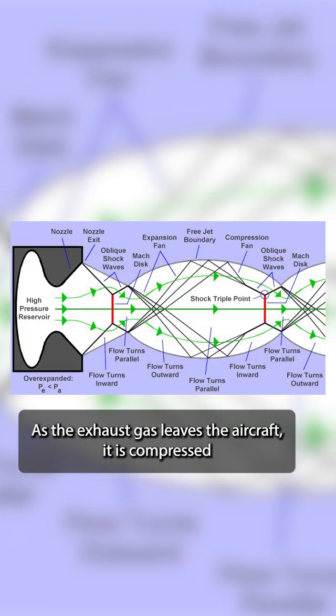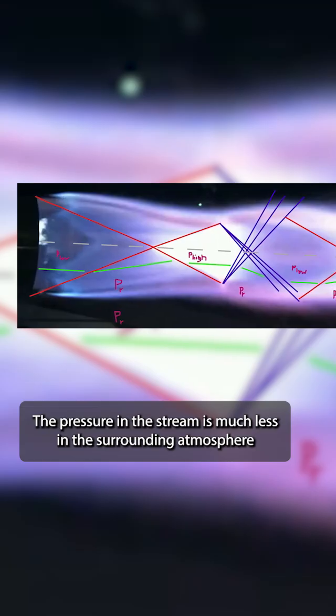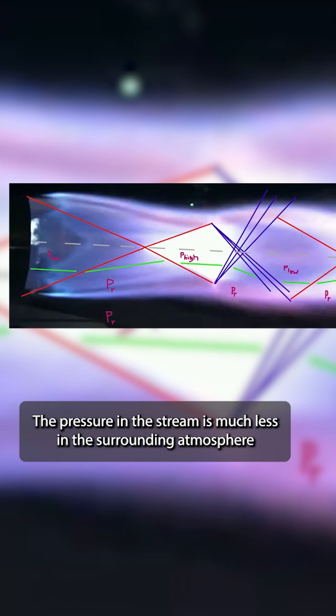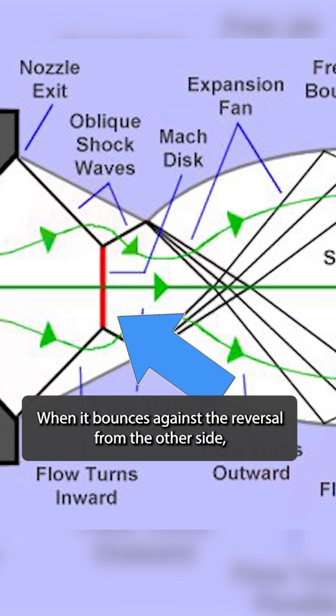As the exhaust gas leaves the aircraft, it is compressed by an oblique shock wave, causing it to stack up on itself. The pressure in the stream is much less than the surrounding atmosphere due to acceleration, causing the exhaust to converge.